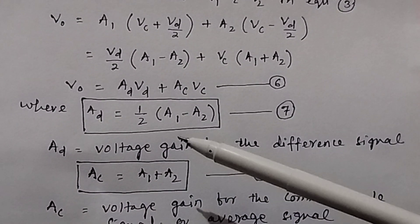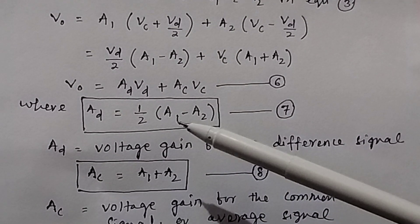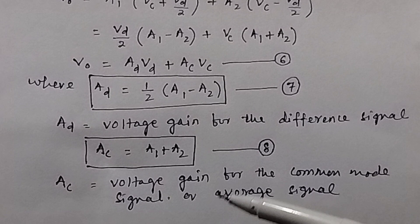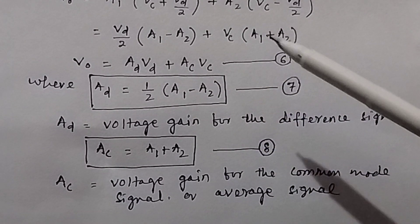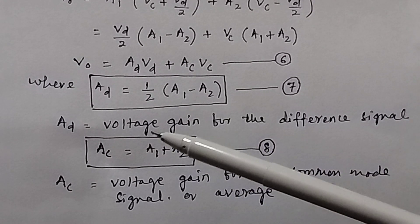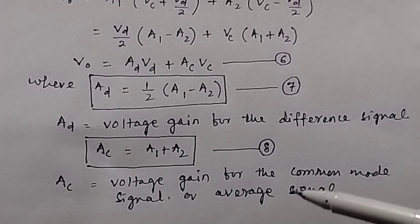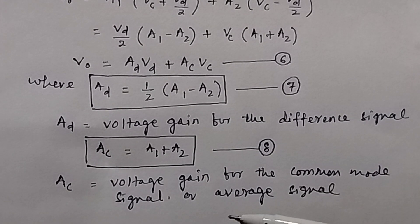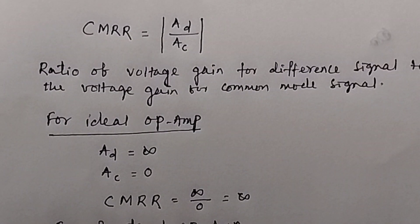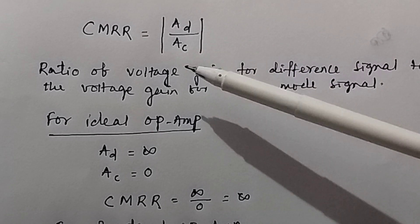Ad is the voltage gain for the difference signal, which equals half of (A1 minus A2). Ac is the voltage gain for the common mode signal, which equals A1 plus A2. You need to find both Ad and Ac because the common mode rejection ratio is Ad divided by Ac. After finding Ad and Ac, dividing them gives you the CMRR.